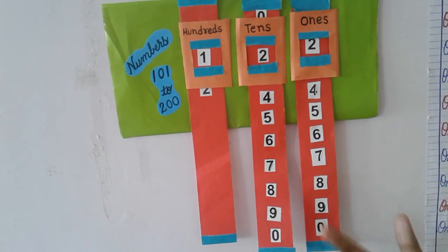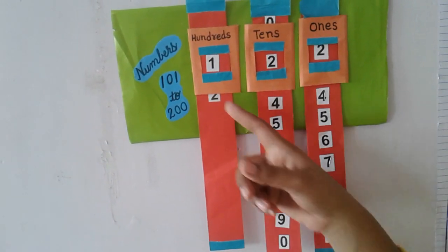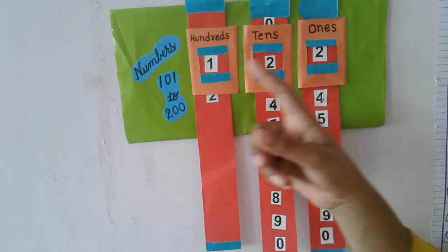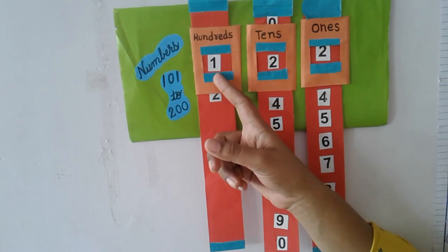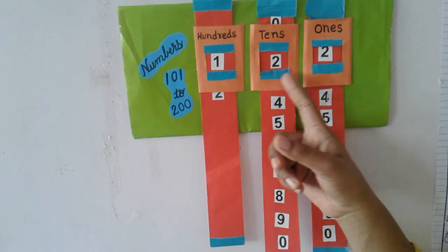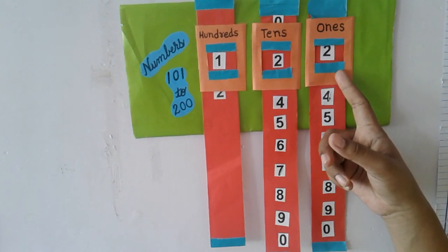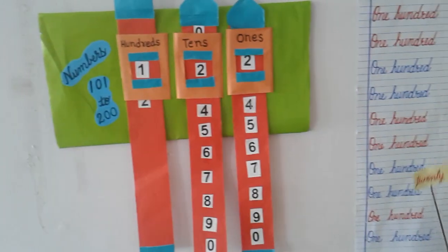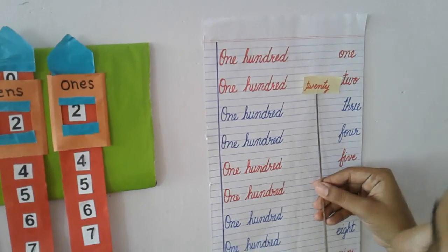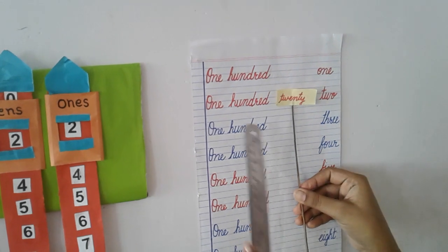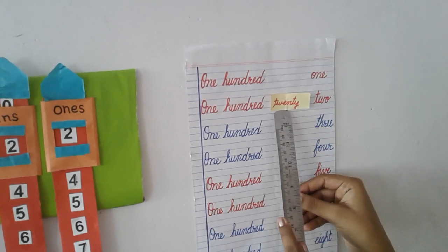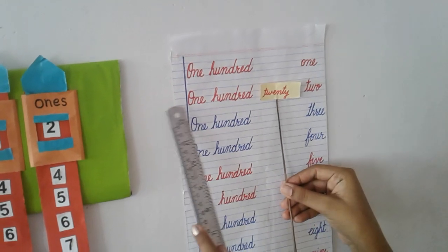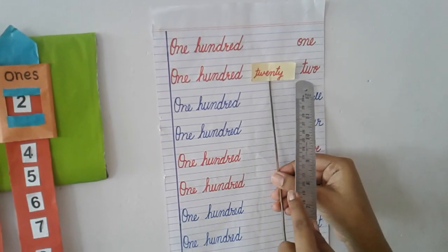Let's start with the dodging. In your notebook, you have to write the spelling of 122. Write the spelling of 122. Okay, now I will show you the answer. Answer of 122 is ONE HUNDRED TWENTY TWO.